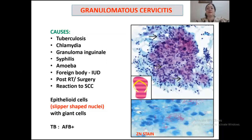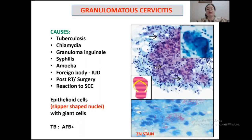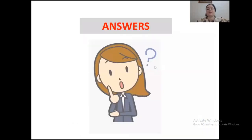Granulomatous cervicitis is encountered occasionally in practice. Various causes include tuberculosis, Chlamydia, granuloma inguinale, syphilis, foreign body, post-radiation, or surgery, and it can occur as a reaction to squamous cell carcinoma. In developing countries, the most common cause is tuberculous cervicitis, which commonly occurs secondary to tuberculous salpingitis. In tuberculosis, the smear shows epithelioid cell granulomas with characteristic slipper-shaped nuclei. Diagnosis can be confirmed with Ziehl-Neelsen stain showing acid-fast bacilli, PCR, or culture.